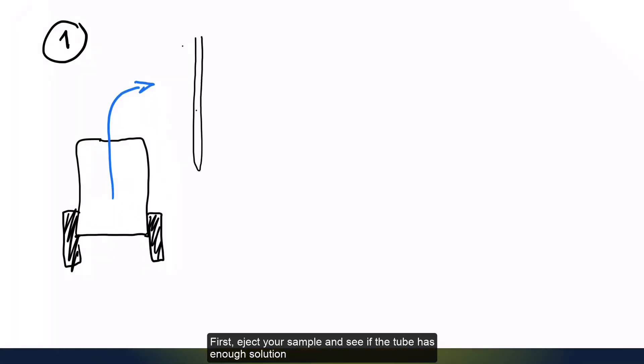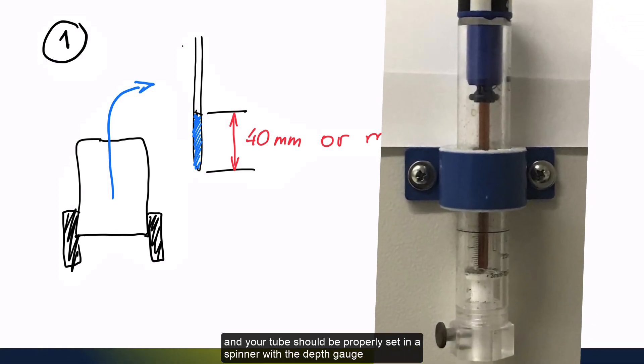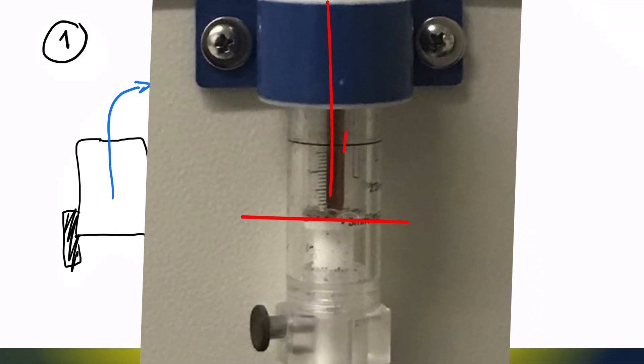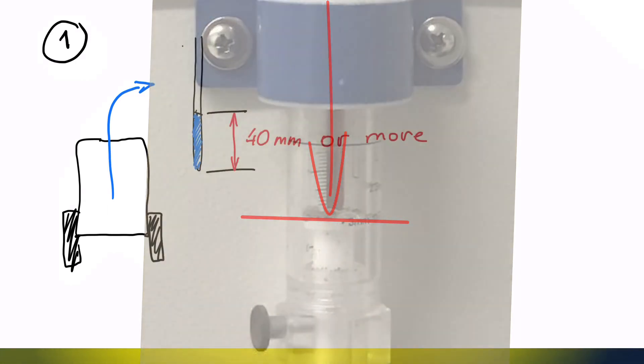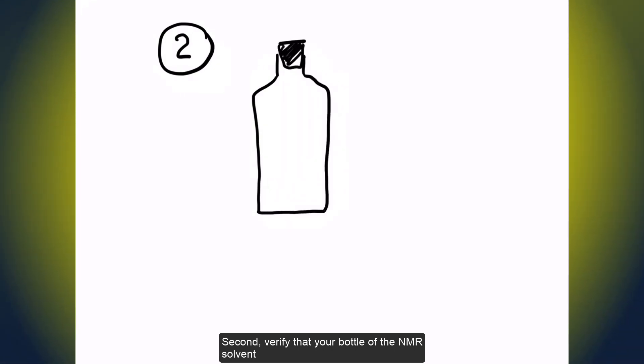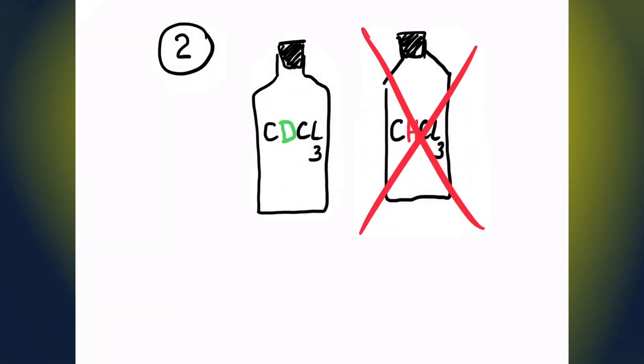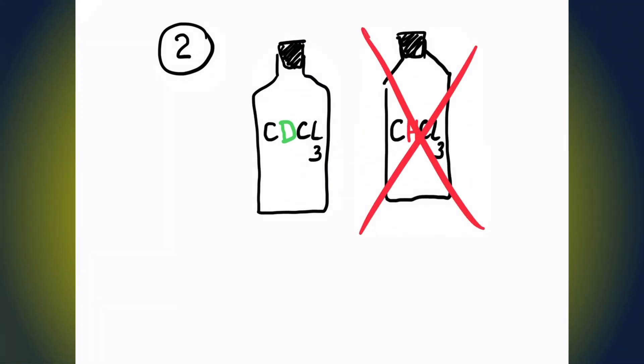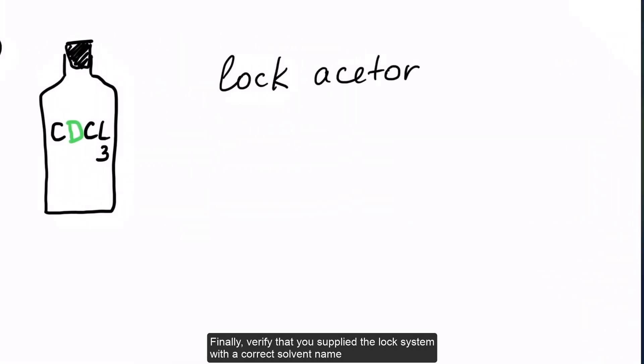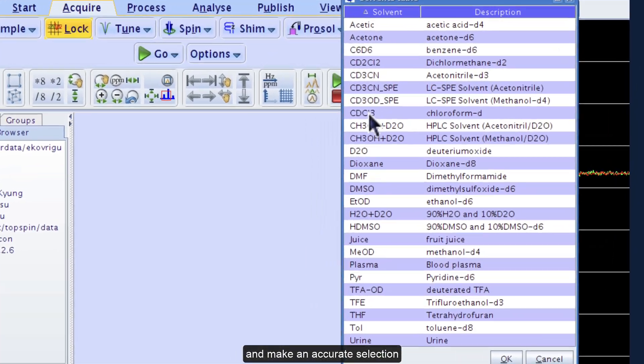First, eject your sample and see if the tube has enough solution. Your sample should be 40 millimeters or longer, and your tube should be properly set in a spinner with a depth gauge. Second, verify that your bottle of the NMR solvent contains deuterated solvent indeed, not its protonated variety. Finally, verify that you supplied the lock system with the correct solvent name. Use lock command to open the solvent table and make an accurate selection.